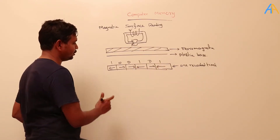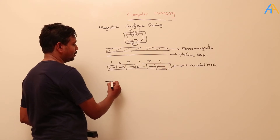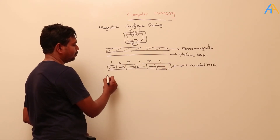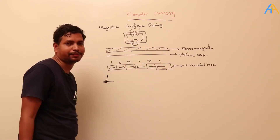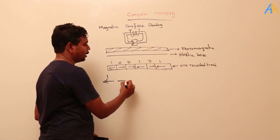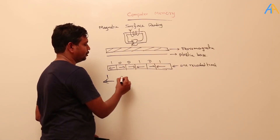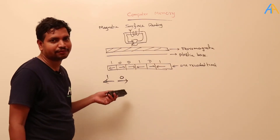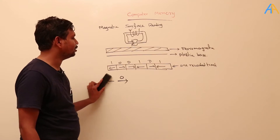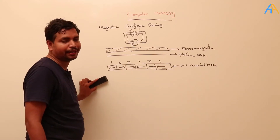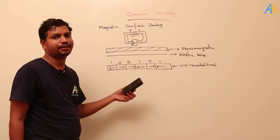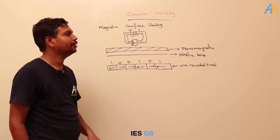For example, if the material is magnetized in one direction, it will be assumed as one. If it is magnetized in the opposite direction, it will be assumed as zero. Depending on this dipole alignment, they assume either zero or one.